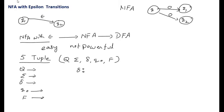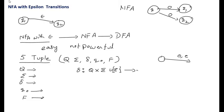Now we need to learn about Delta, the transition function. On transitions, along with the input symbols, it can also have the Epsilon symbol. The transition function maps Q cross (Sigma union Epsilon) to 2 power Q — meaning it includes not just input symbols but also the Epsilon symbol.